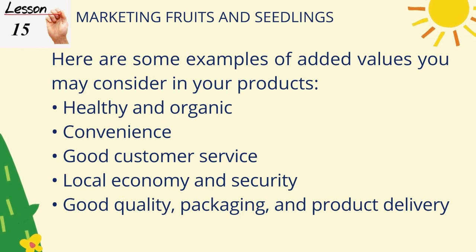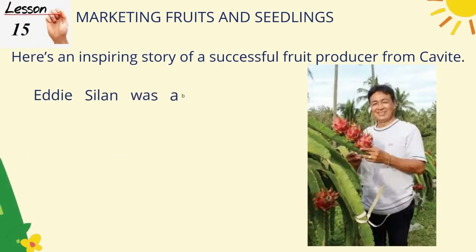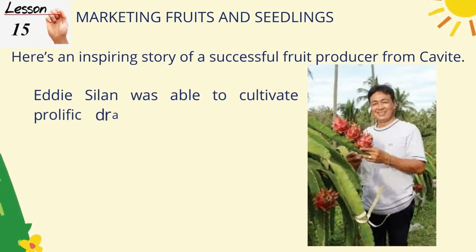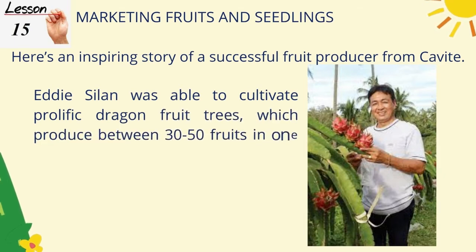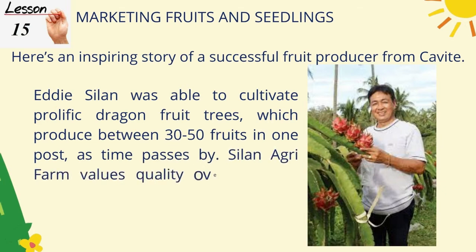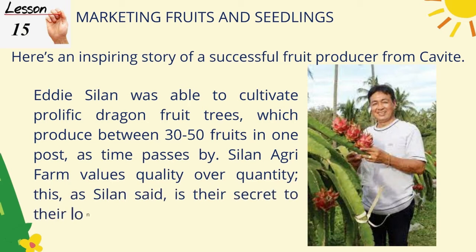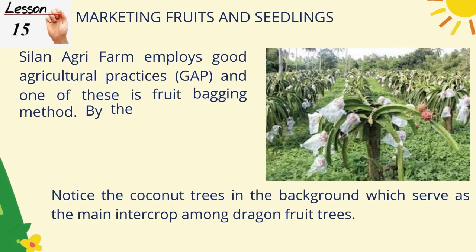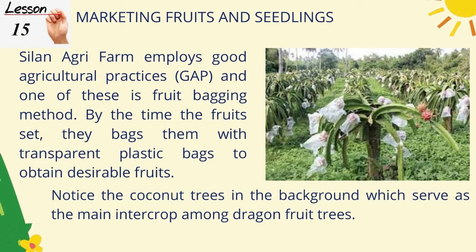Here is an inspiring story of a successful fruit producer from Cavite. Eddie Celon was able to cultivate prolific dragon fruit trees which produce between 30 to 50 fruits in one post. As time passed, Celon Agri Farm valued quality over quantity — this, as Celon said, is their secret to their long years of growing success. Celon Agri Farm employs good agricultural practices (GAP), and one of these is the fruit bagging method.